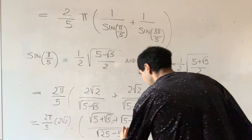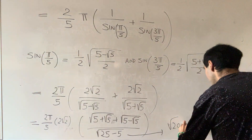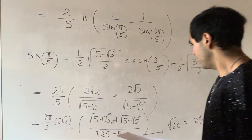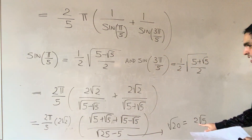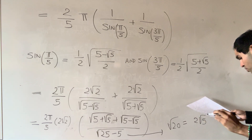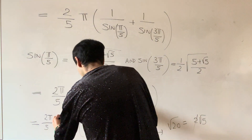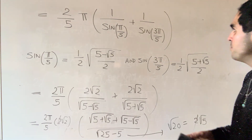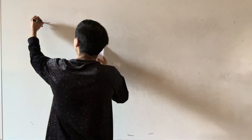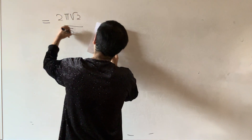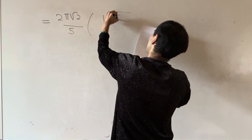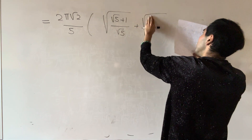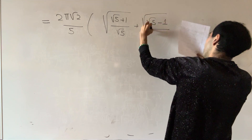So the denominator is the square root of twenty-five minus five, which is the square root of twenty, which is two square root of five. That square root of five can be placed here, and then the two simplifies with one of the other twos. We get two pi square root of two over five, and then square root of square root of five plus one over square root of five, plus square root of five minus one over square root of five.